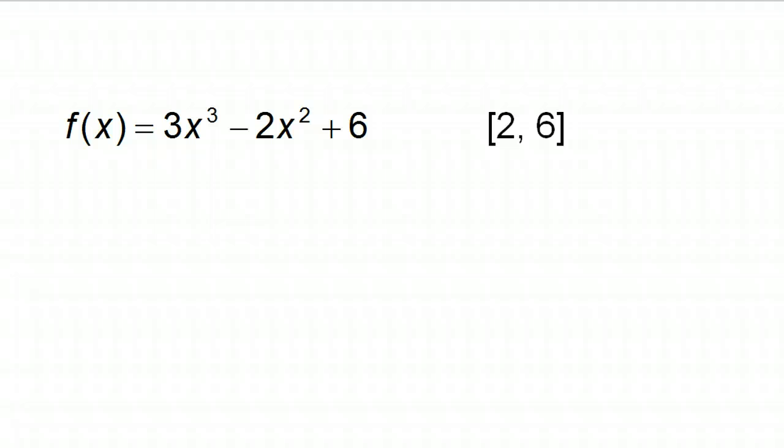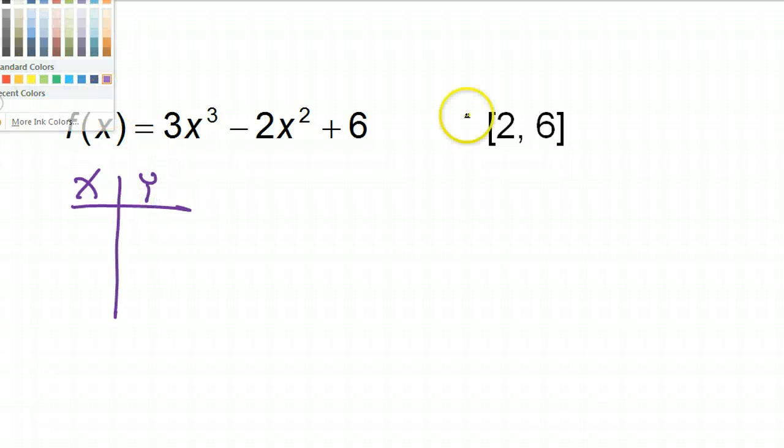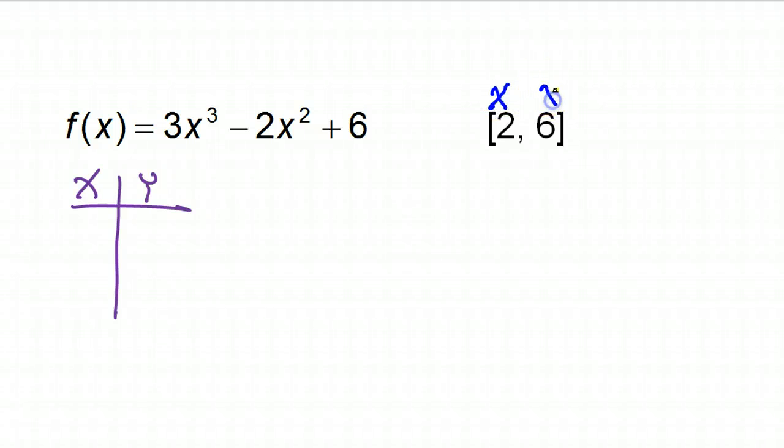Again, let's make a table of values. All right, so please understand that this interval, they're giving us x values here. These are x values. Okay, so make your table of values. So we have these two x values, 2 and 6. Let's find the y values that go with them.